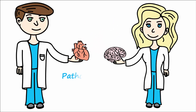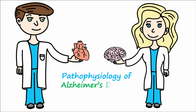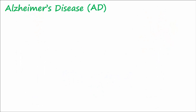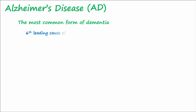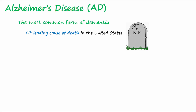Today let's discuss the pathophysiology of Alzheimer's disease. Alzheimer's disease, abbreviated AD, is the most common form of dementia and is the sixth leading cause of death in the United States. Prevalence will approach 16 million in the US by 2050.